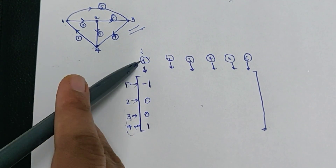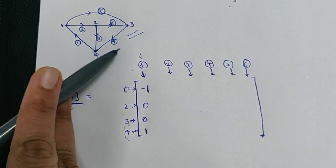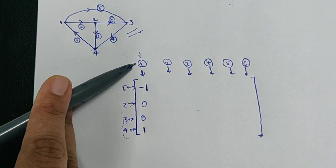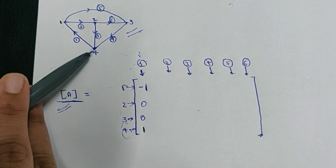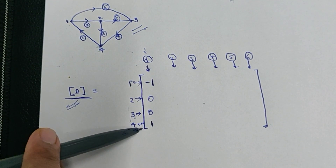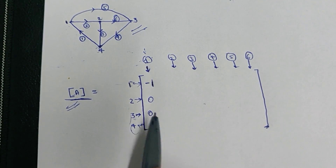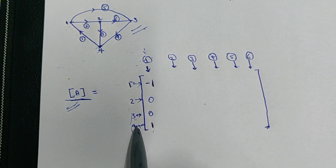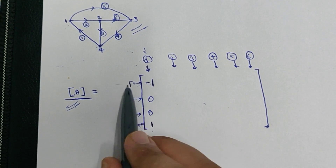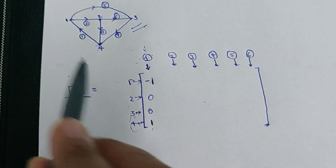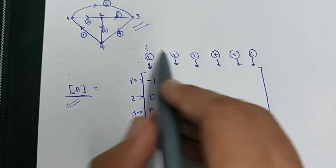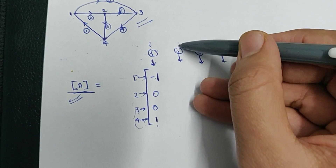Let us repeat: in the first branch, the current is flowing from node 4 to node 1. Therefore we give a value of +1 to node 4 and -1 to node 1, and zero to the other elements because they don't have any involvement.